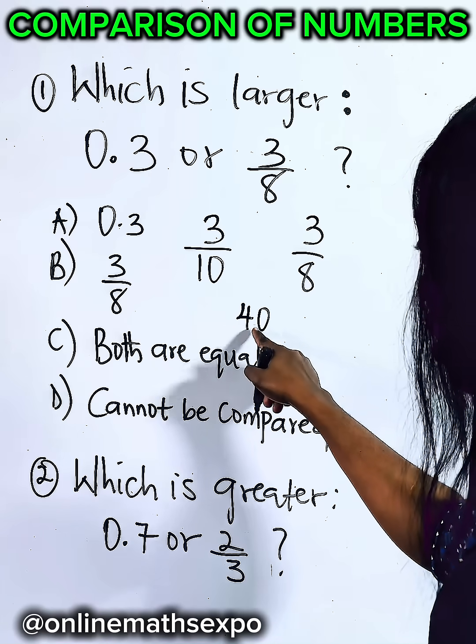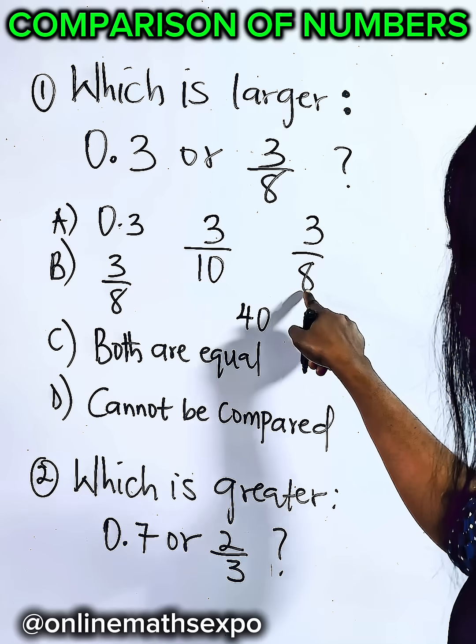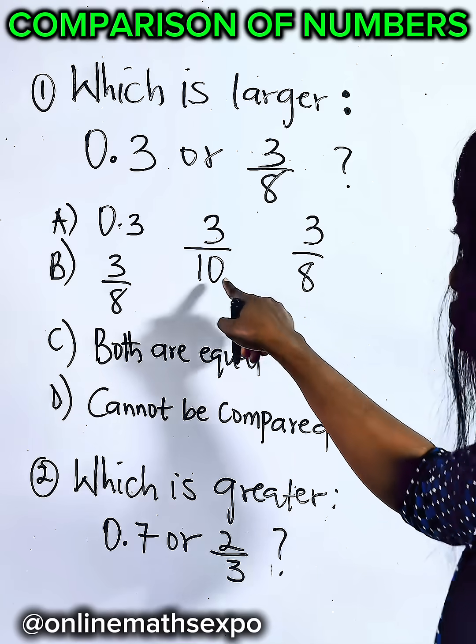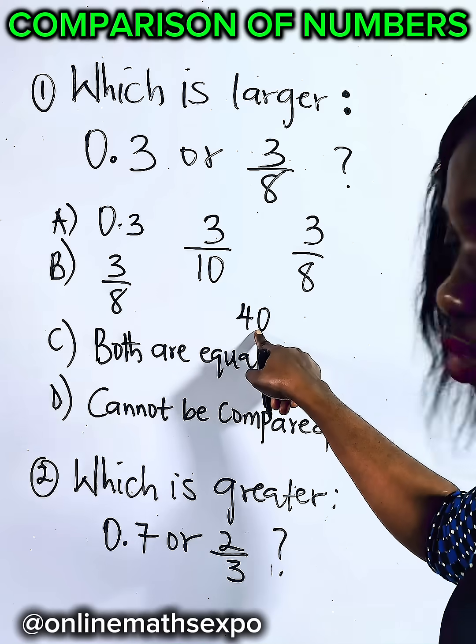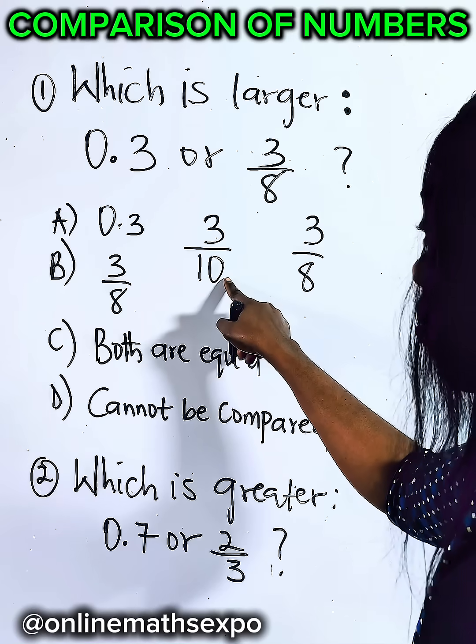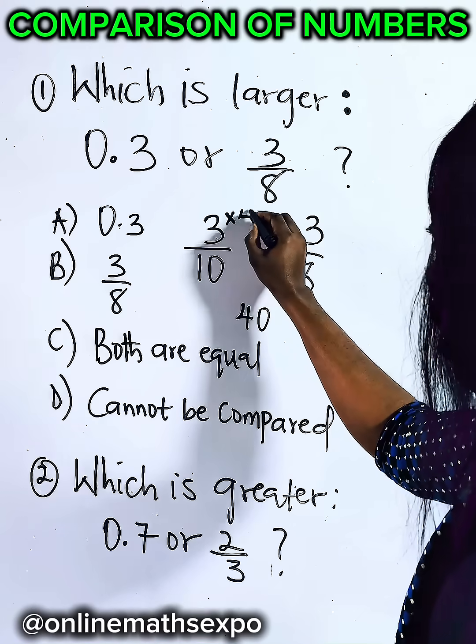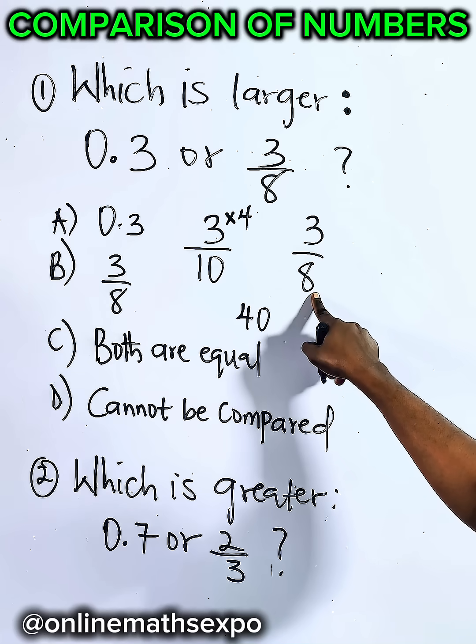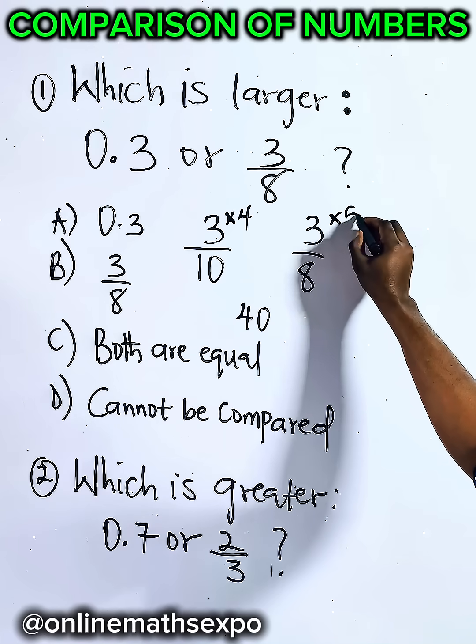So if it's 40, it means that 10 can divide 40, 8 can divide 40. So what will I do to 10 to make it 40? I will have to multiply by 4. So multiply this by 4. For this, I will multiply by 5.